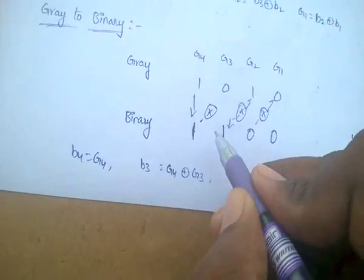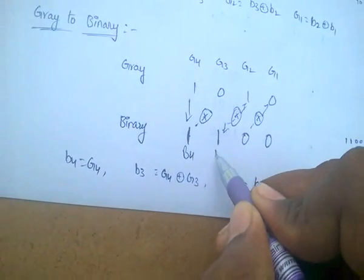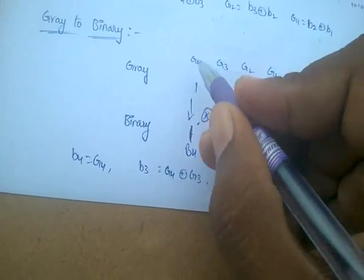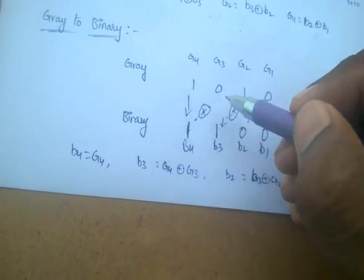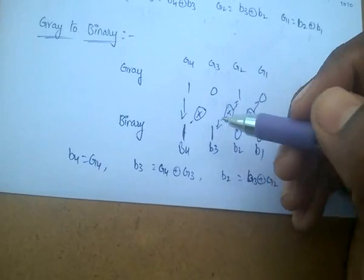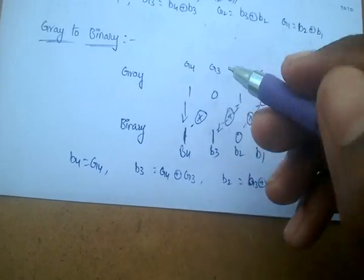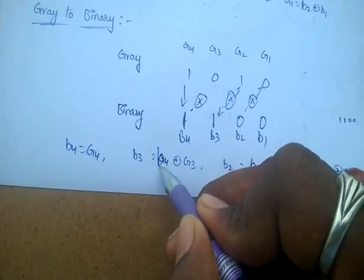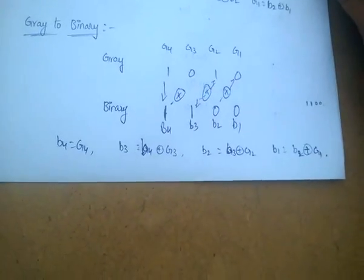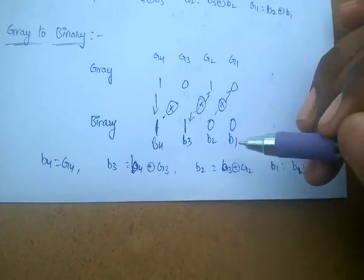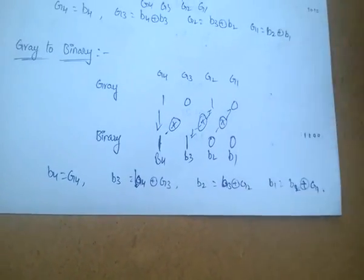Write down B4, B3, B2, B1. For B4, it is G4. For B3, it is B4 XOR G3. For B2, it is B3 XOR G2. For B1, it is B2 XOR G1.